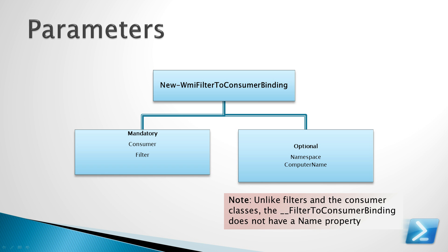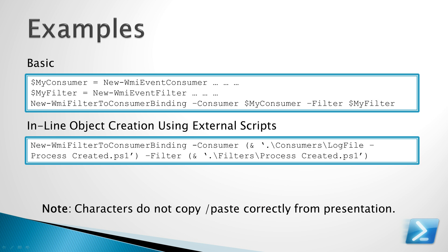Remember that, unlike the filters and consumer classes, the Binding does not have a name property. Here are a couple of quick examples. The first example is the easiest: we create a consumer using the New-WMIEventConsumer cmdlet, we create a WMI Event Filter using the New-WMIEventFilter cmdlet, and finally we use New-WMIFilterToConsumerBinding with the consumer and filter parameters to create the binding between the consumer and the filter.